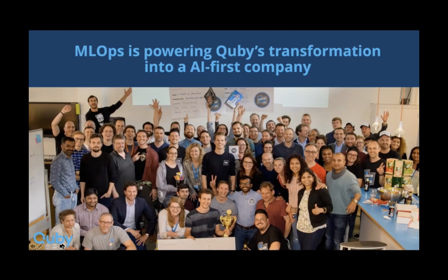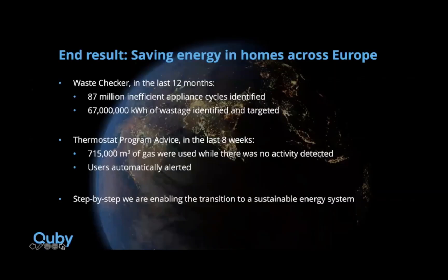Ultimately the impact we're making is on the end result — saving energy in homes. Our waste checker service, which detects inefficient appliances, has detected over 87 million inefficient appliance cycles from the washing machine, dishwasher, and dryer, as well as a huge amount of waste identified and targeted. Another product, Thermostat Program Advice, just in the last eight weeks identified a huge amount of gas being used in homes when there was no activity detected. These users were automatically alerted and able to modify their heating program to better match their habits and behavior. Overall, we're very happy to be step-by-step enabling this transition to a sustainable energy system.